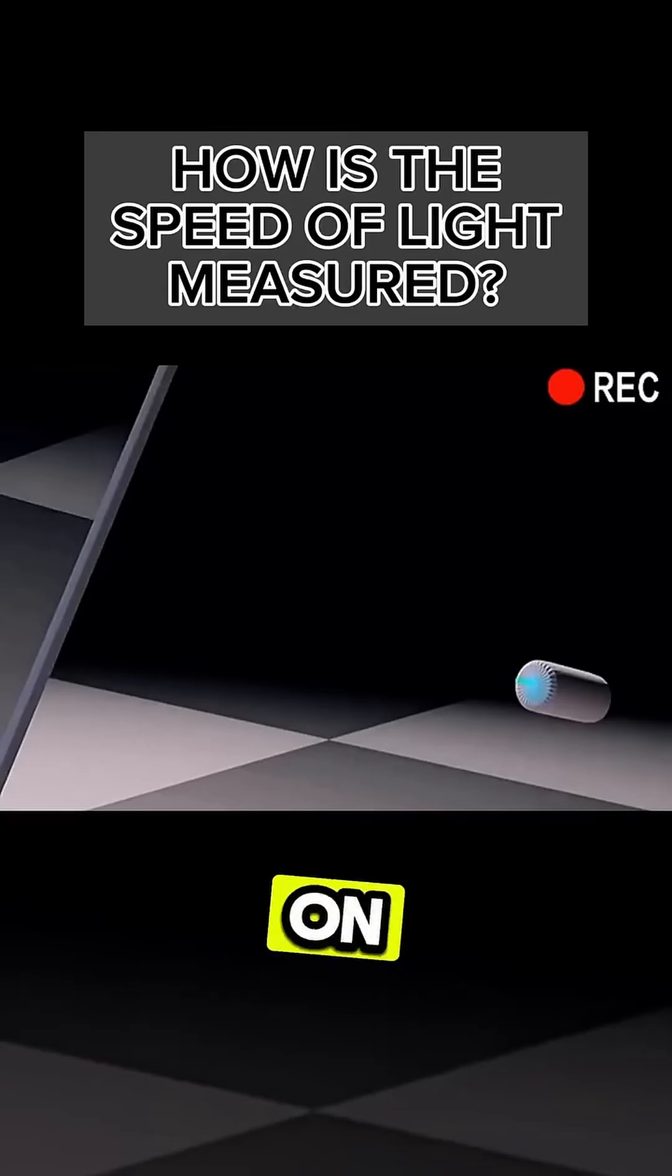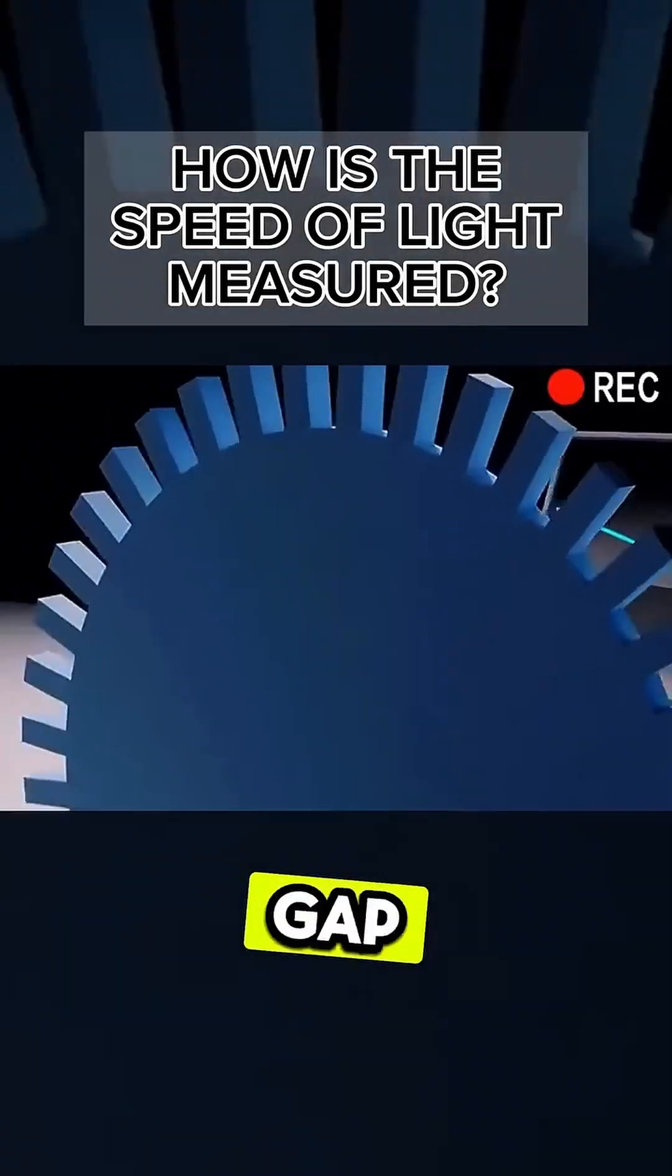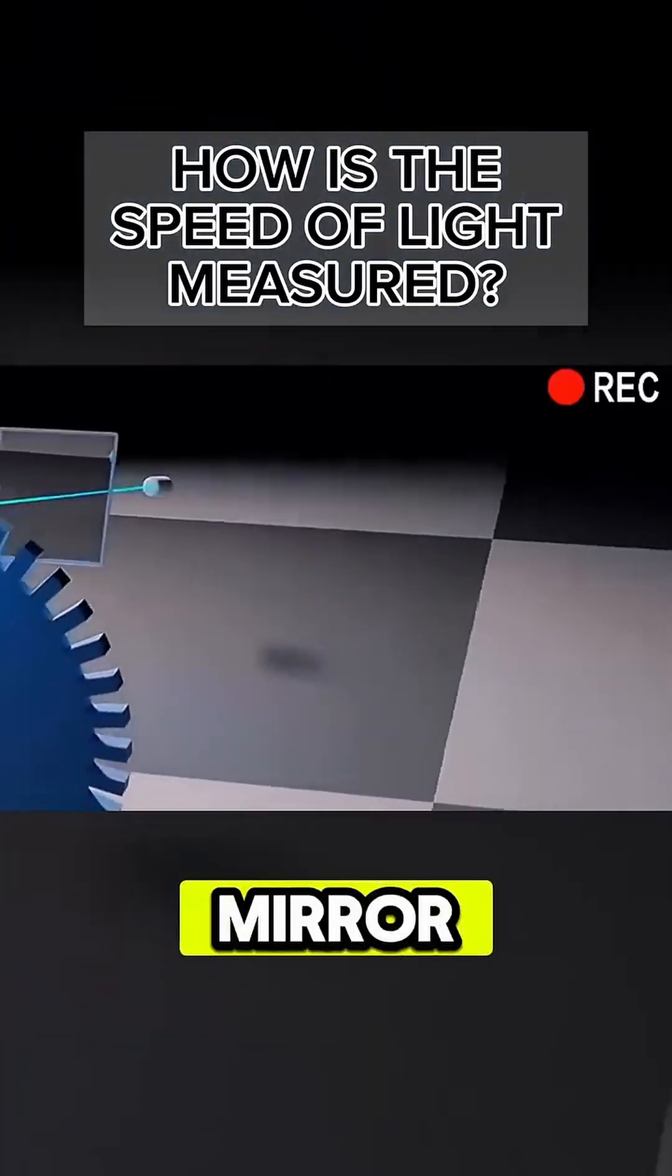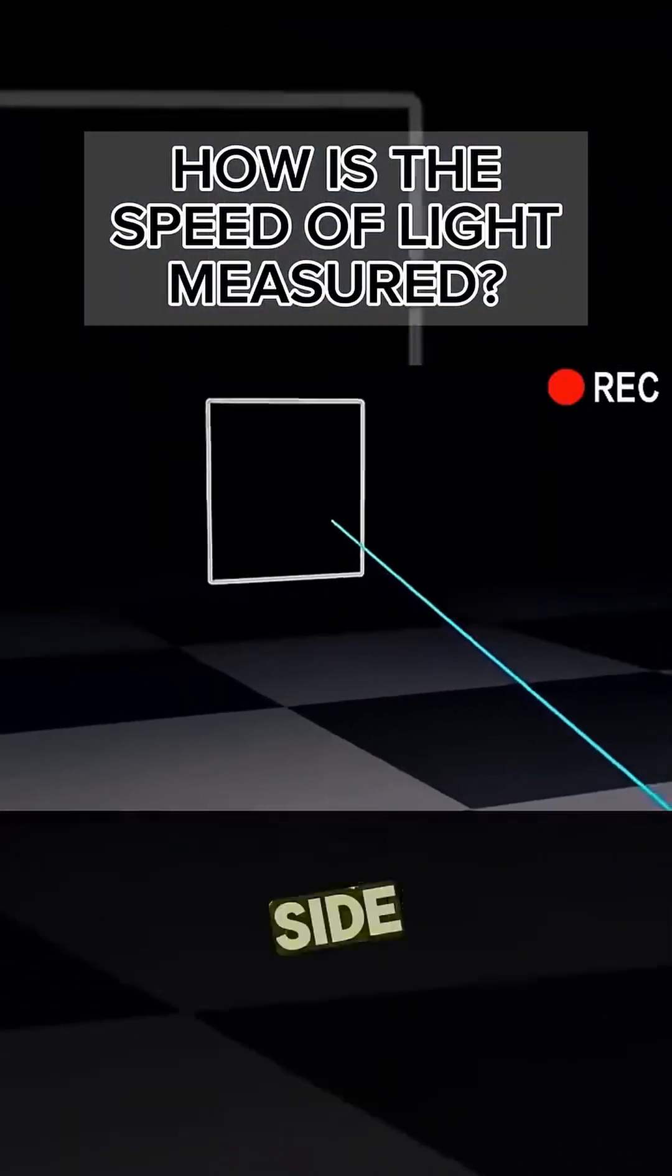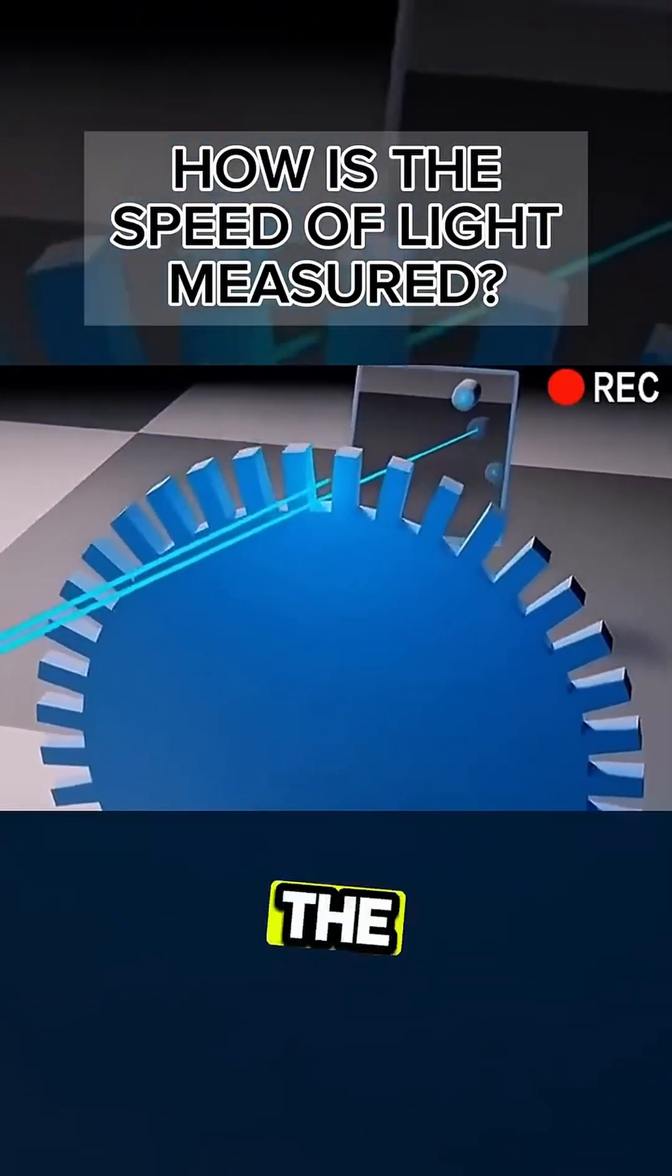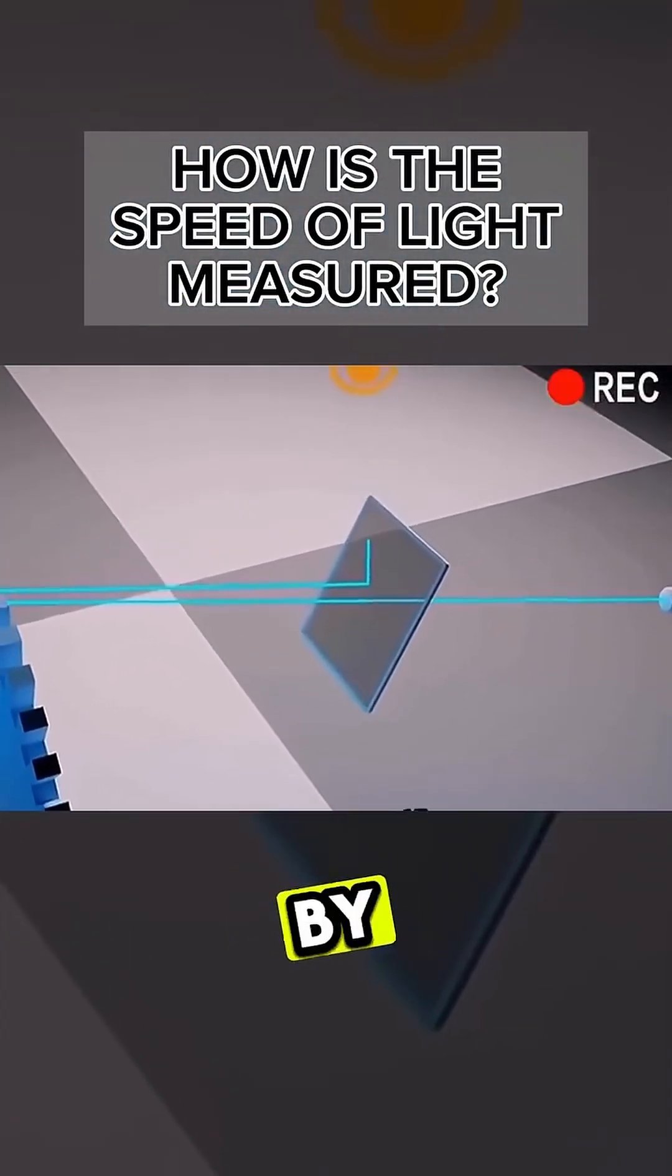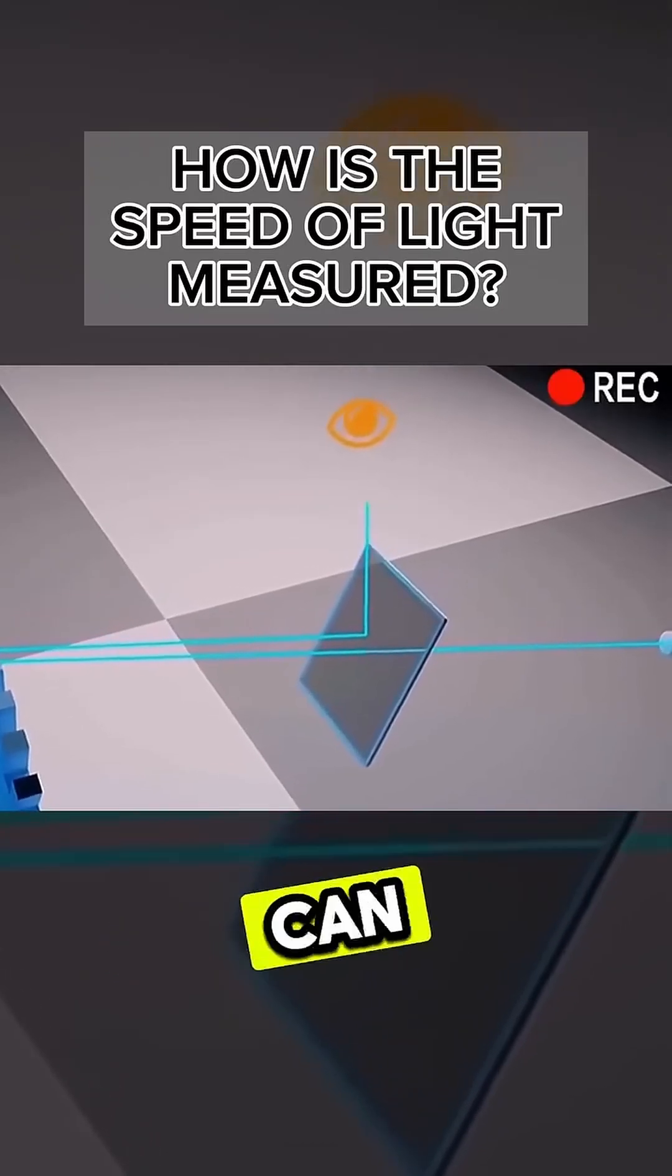When we turn on the light source, the light will first pass through the semi-reflector, then through the gap in the wheel to the opposite mirror. The mirror on the opposite side will reflect the light back and pass through the gap in the wheel again. And then it's reflected back into our eyes by the semi-reflector, so we can see the light.